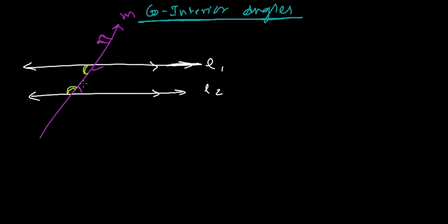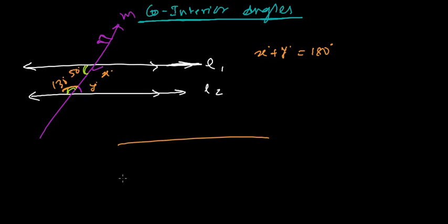The sum of co-interior angles is always 180 degrees. If one angle is x and the other is y, then x plus y equals 180. For example, if one angle is 50 degrees, the other is 130 degrees. We'll be learning the proofs of these things later — how alternate interior angles are equal, how co-interior angles sum to 180, how corresponding angles are equal.